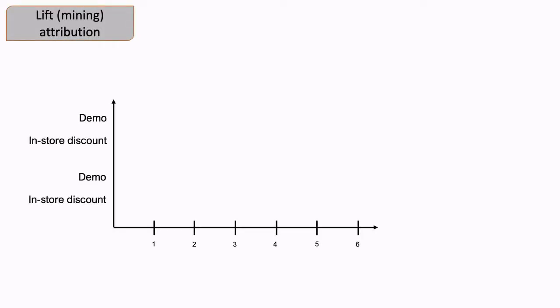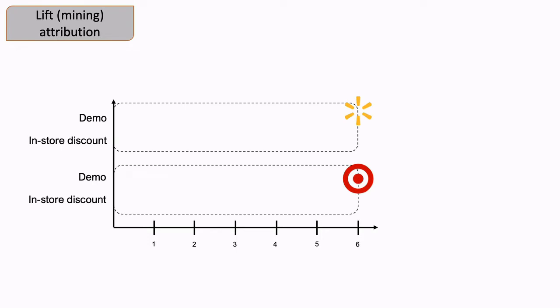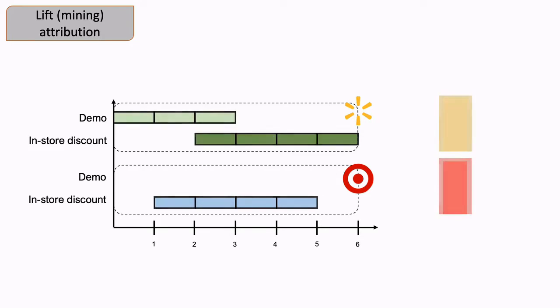Think about a brand that wants to design a marketing campaign over six weeks at Walmart and Target. What the brand sees from the historical observations is the actual marketing activities and their corresponding lift values. At Walmart, demo is applied for the first three weeks and the in-store discount is executed for the last four weeks. What the brand needs to know is the lift breakdown, which is the fraction of total lift attributable to demo and in-store discount.